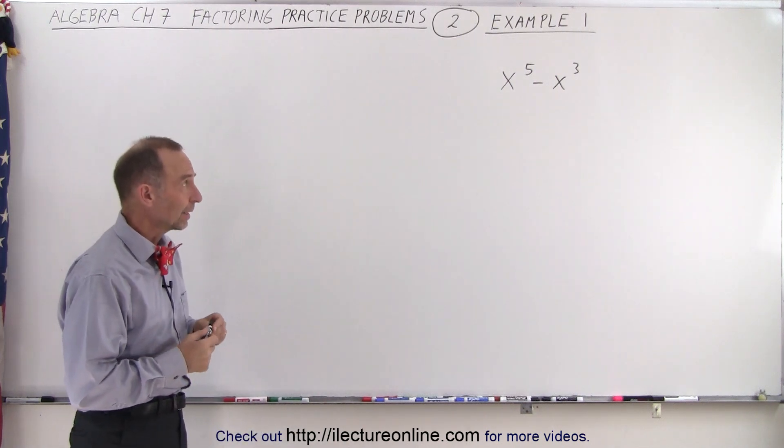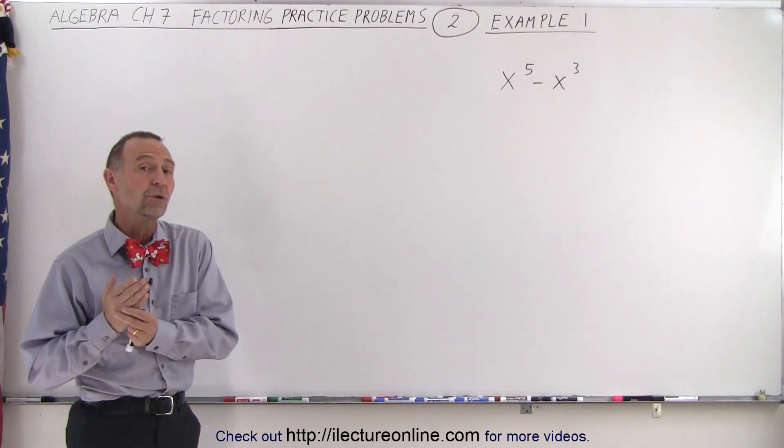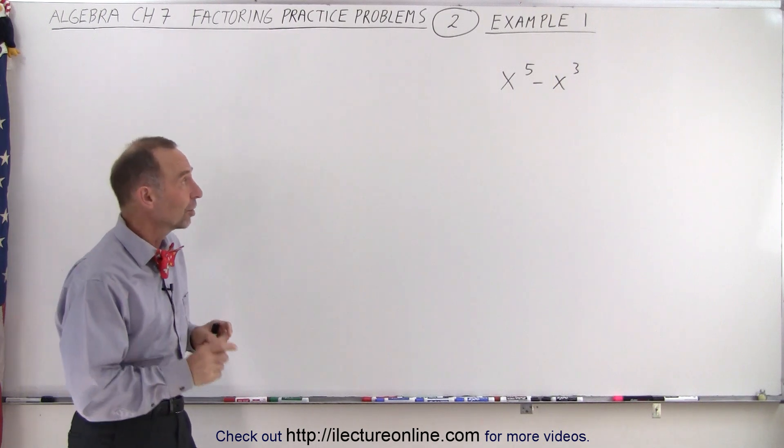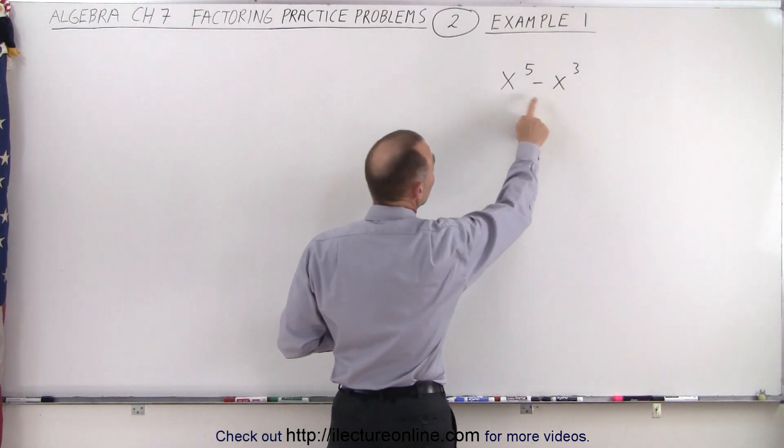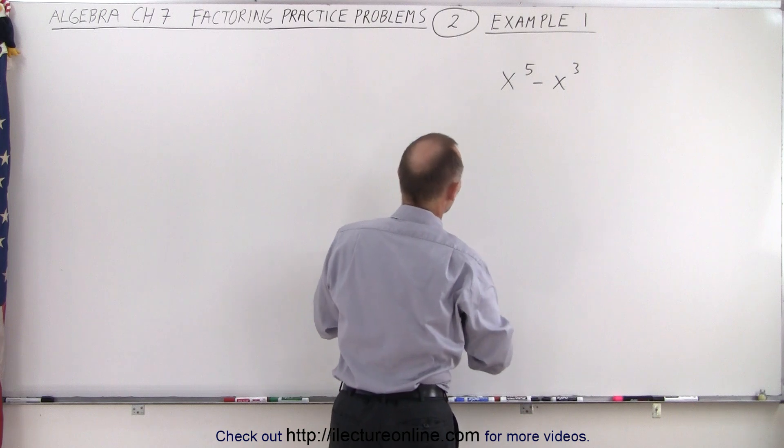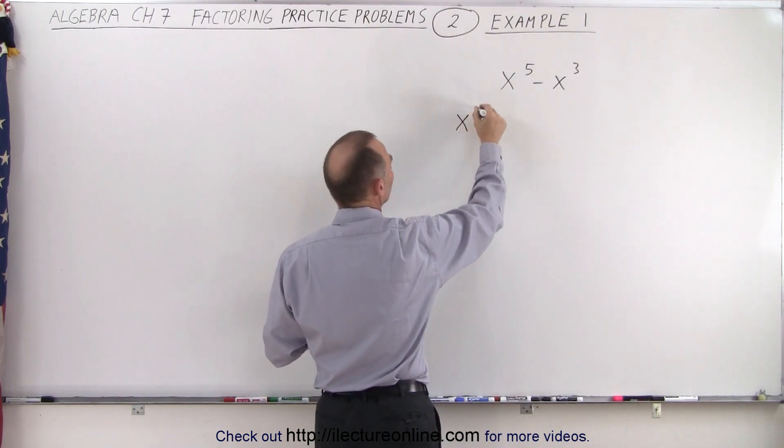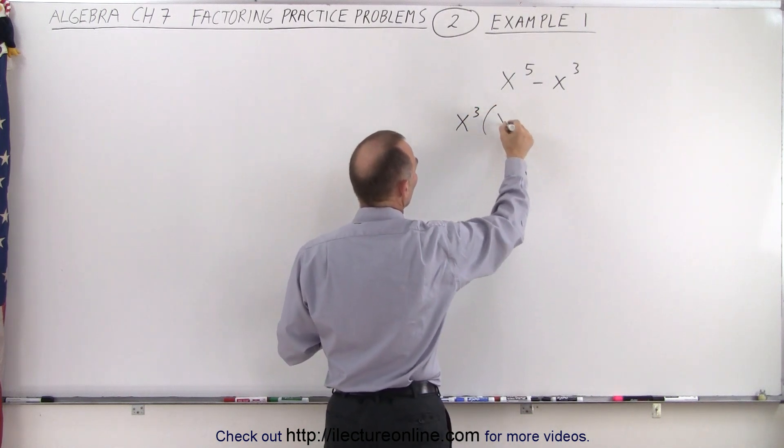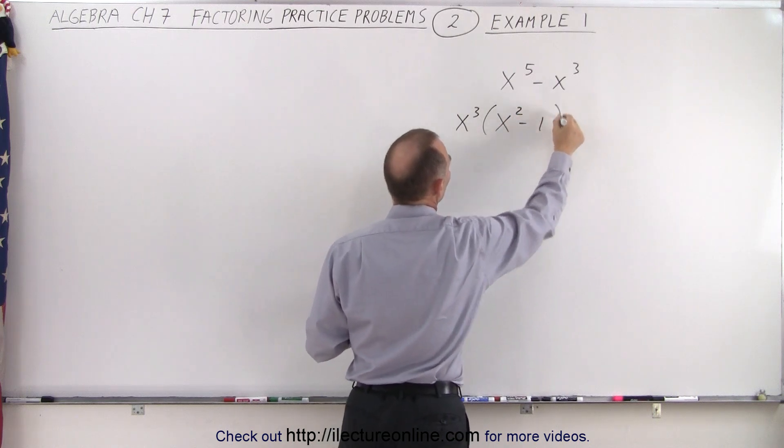So what do we do when we have something like this? First, what we want to do is see if there's any common factors, and it turns out x cubed is a common factor among both of those terms. So we can factor out an x cubed, x cubed times, and what's remaining is an x squared minus one.